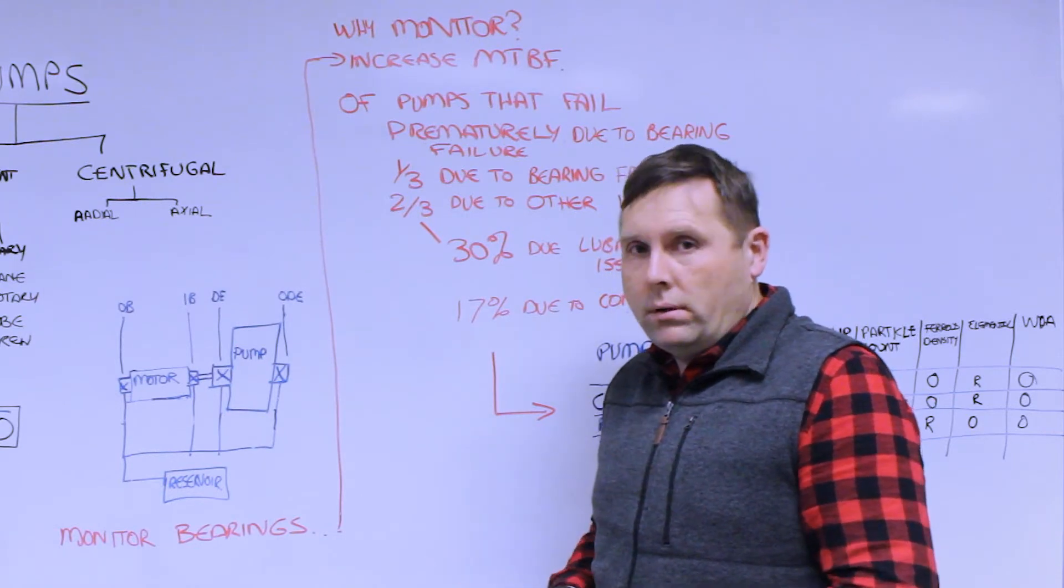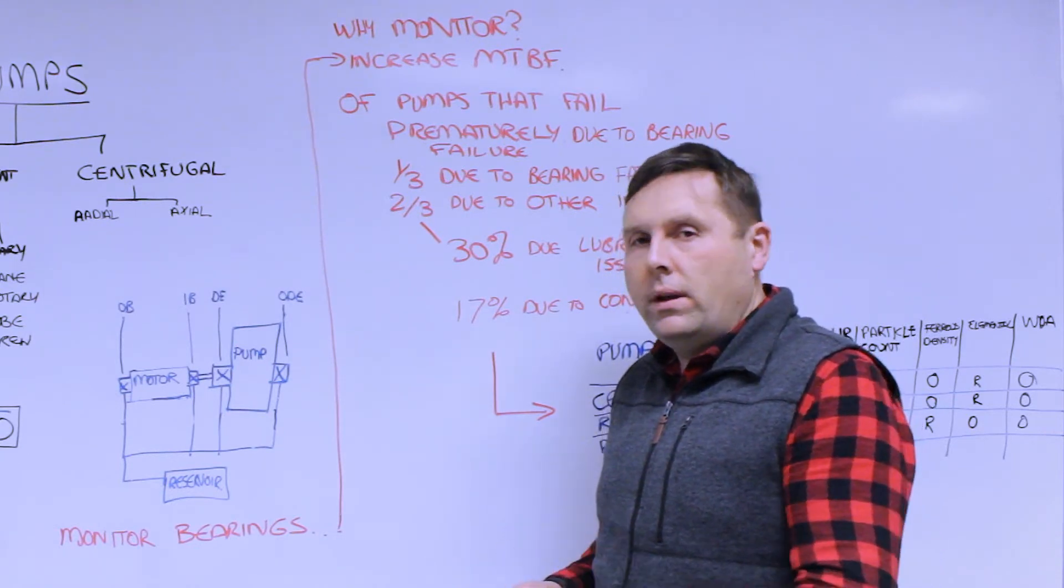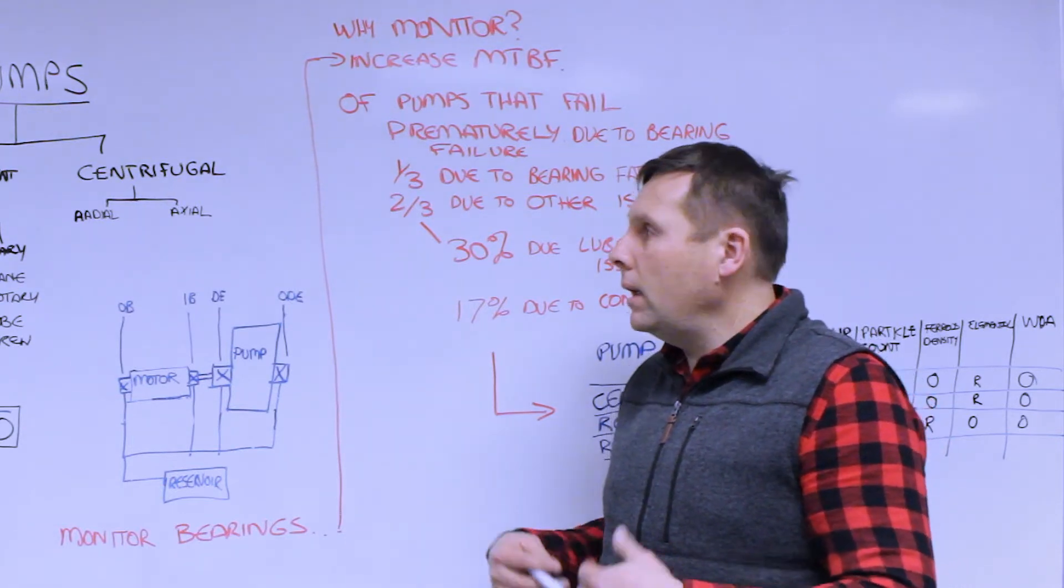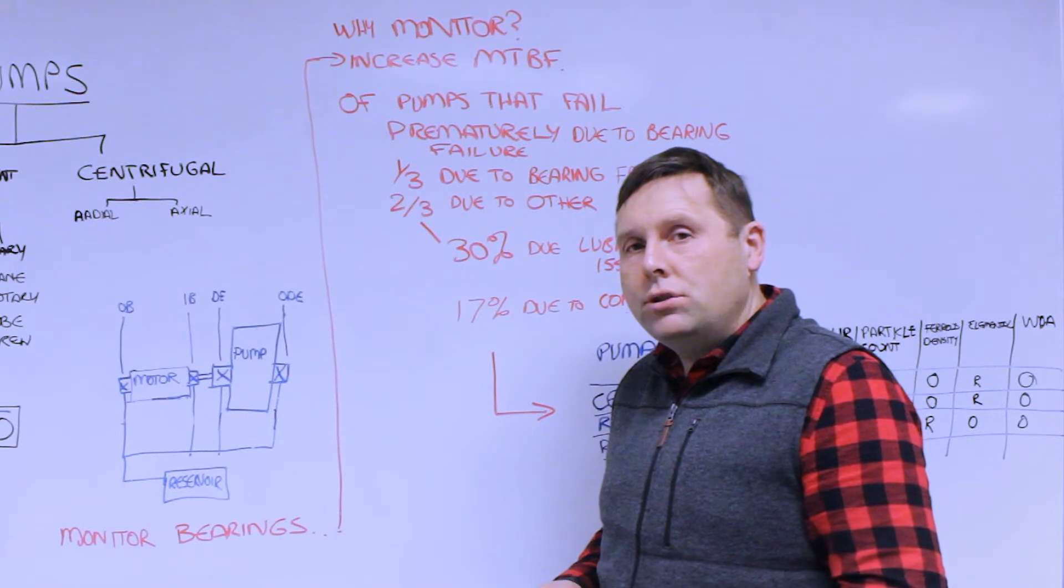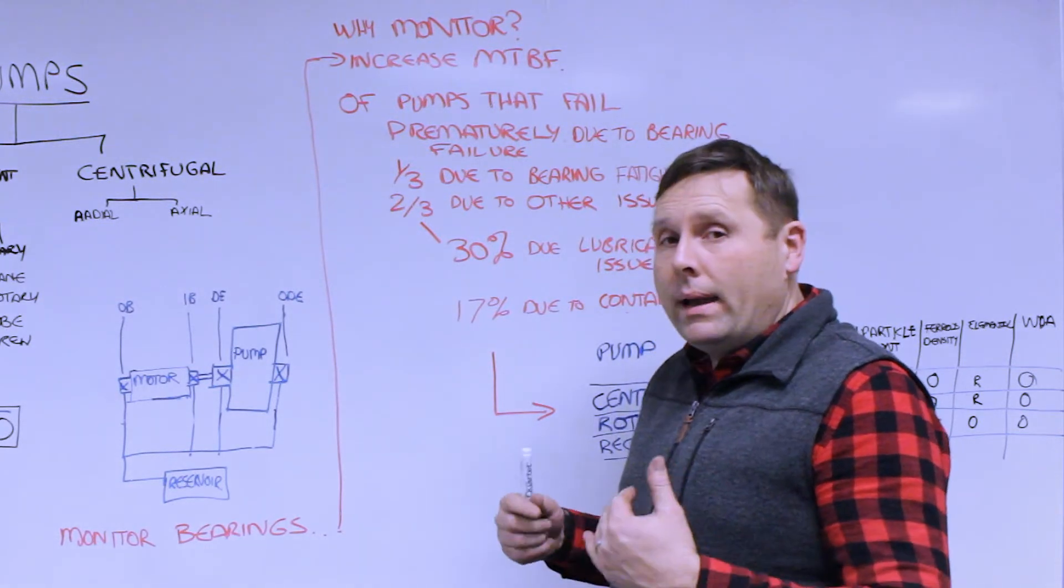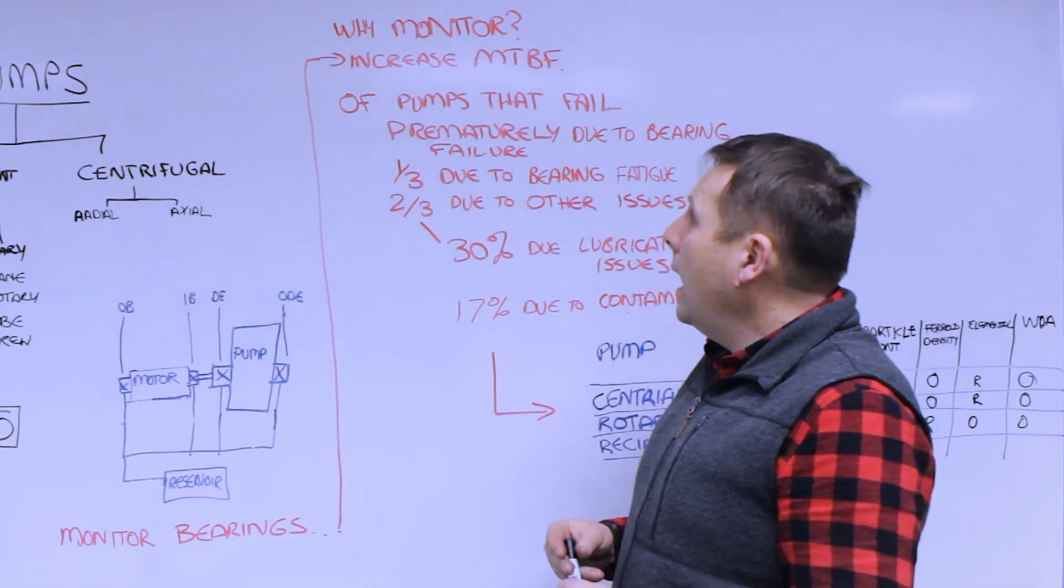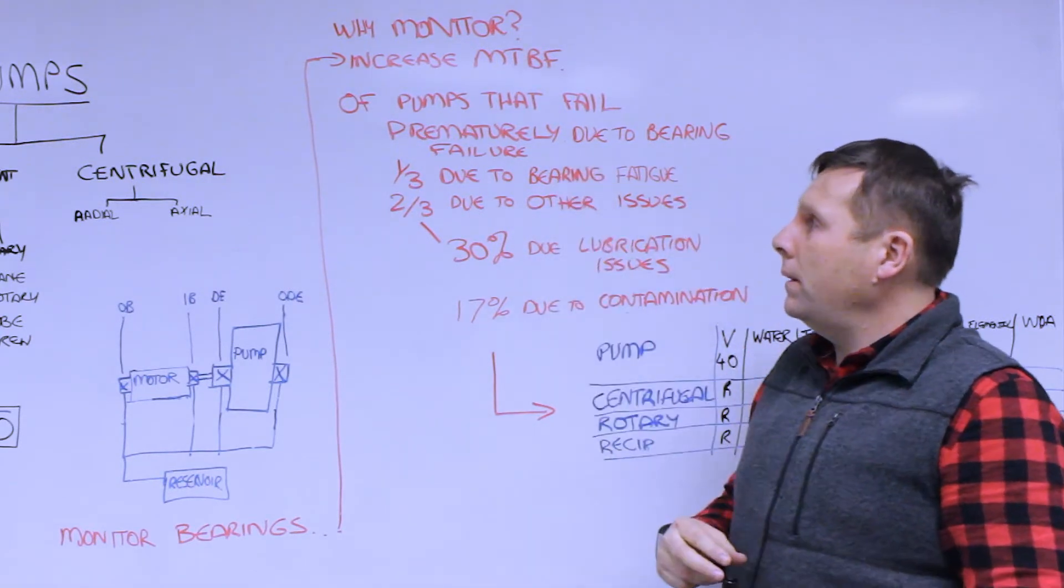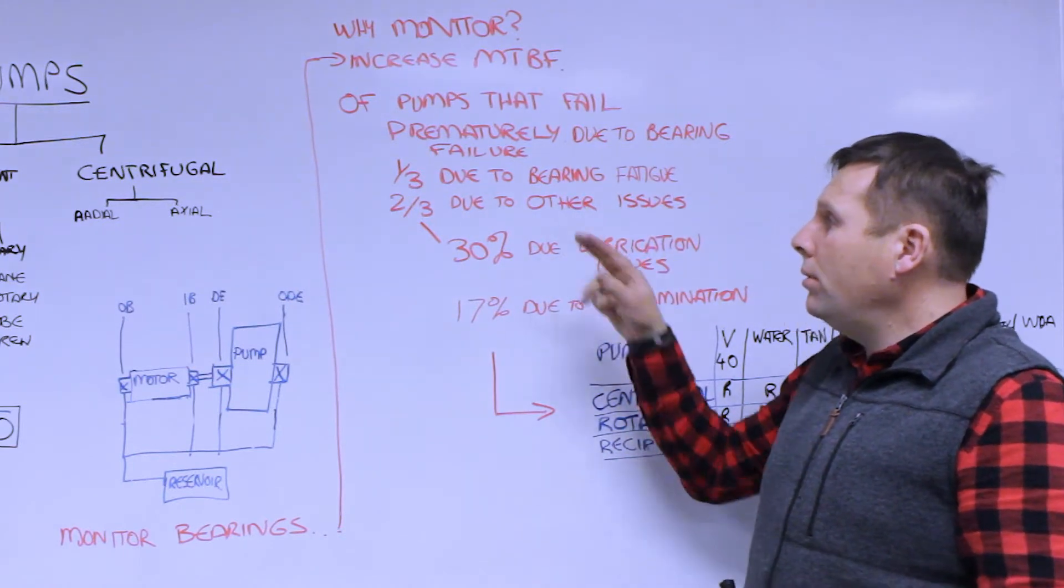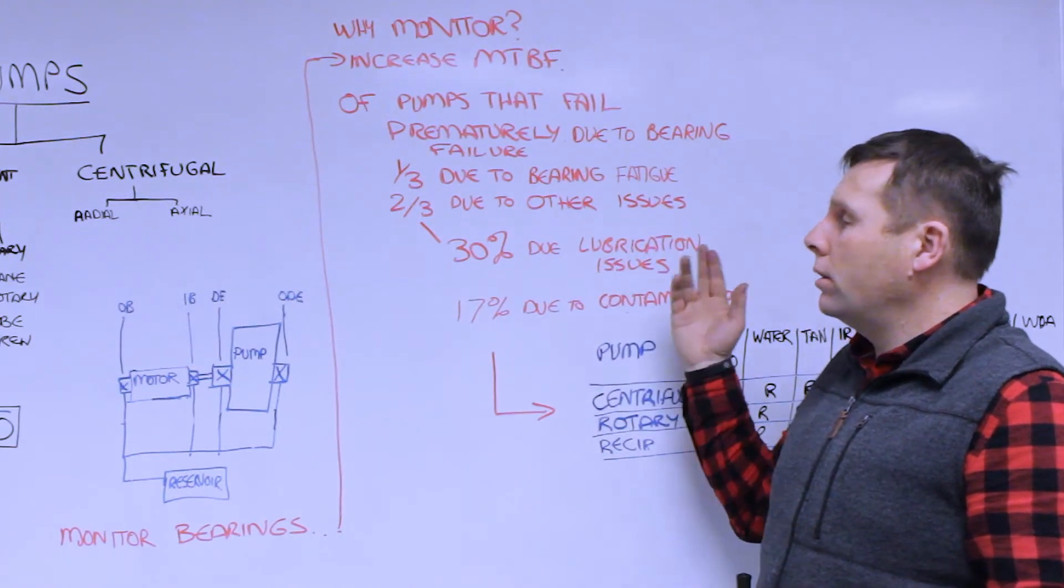Pumps can fail through a variety of reasons - through vibration, due to the impeller breaking down, or due to alignment issues. However, the majority of pumps that fail by bearing-related issues - of those that fail prematurely due to bearing failure, one third is due to bearing fatigue and two thirds of those failures is due to other issues.